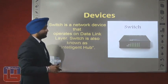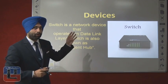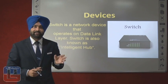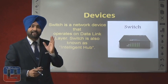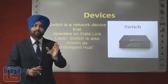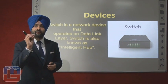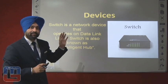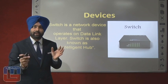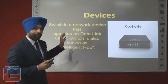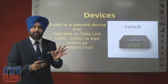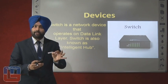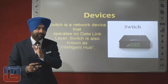Now we have the devices that operate on DLL. The first one is a switch. A switch is actually an intelligent hub. It works on the principle of delivering data to a specific port, to a specific address. Switch is used to connect various nodes on a network as a hub does, but switch does not broadcast — it delivers data to a particular address.